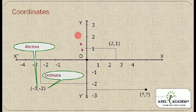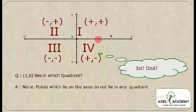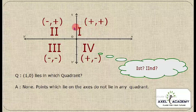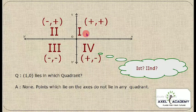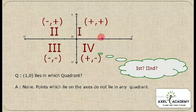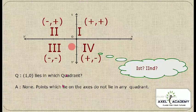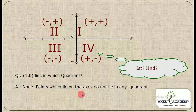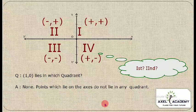If a point lies completely on the x-axis or completely on the y-axis, it does not lie in any of the four quadrants. This is an important point to keep in mind.